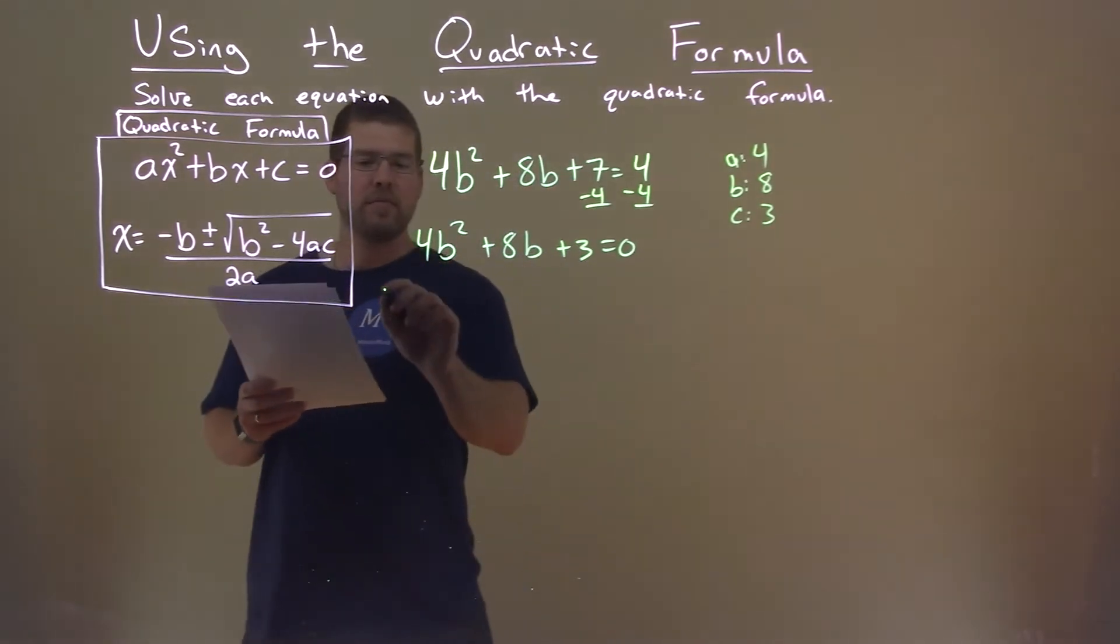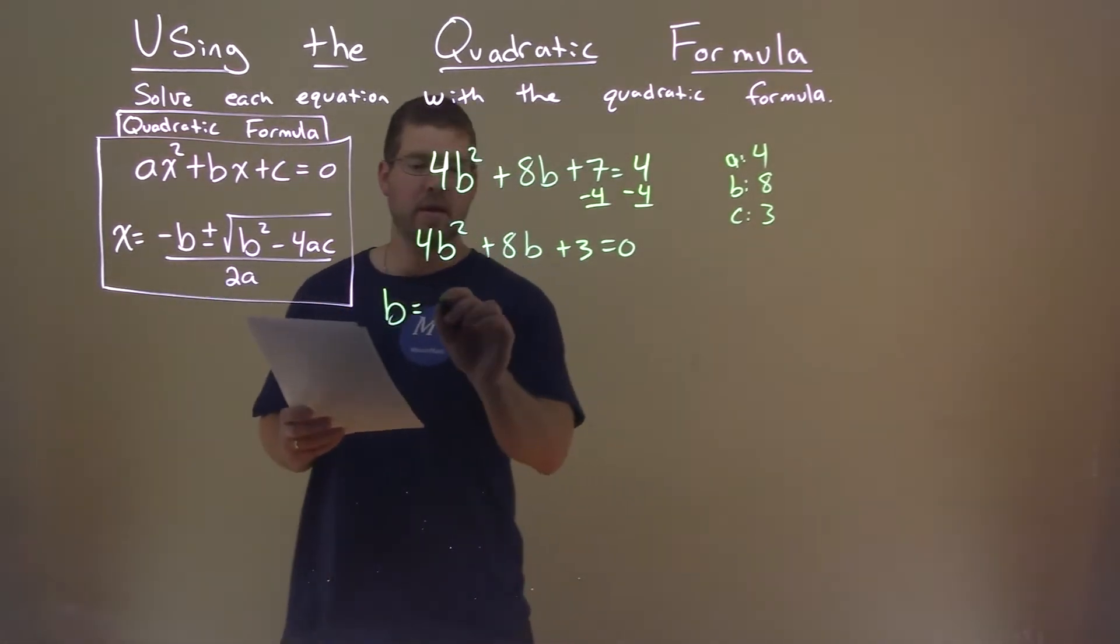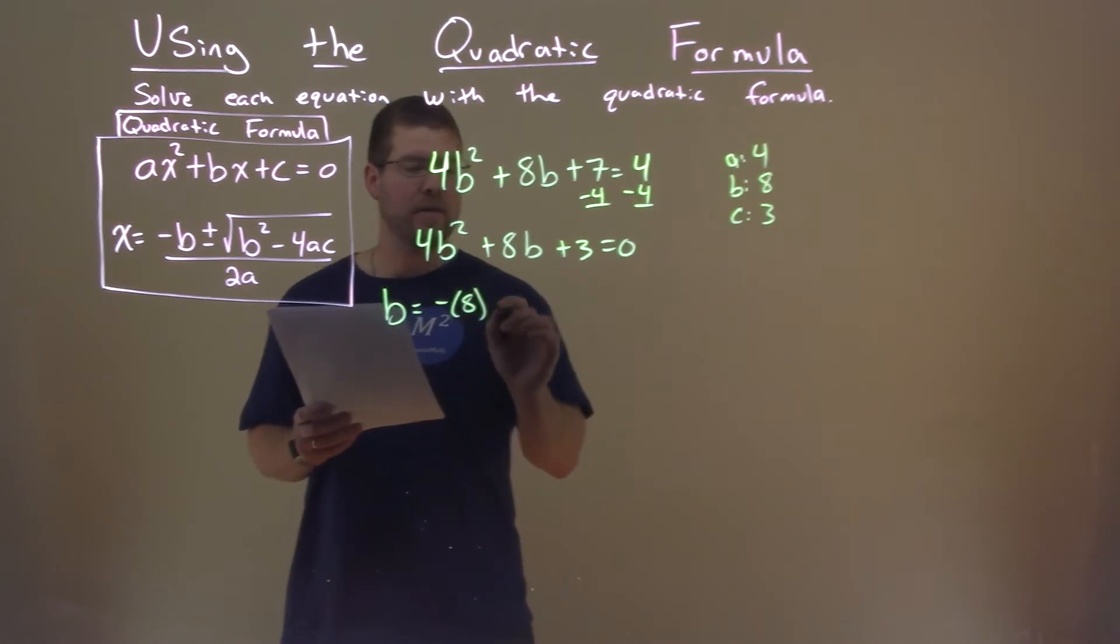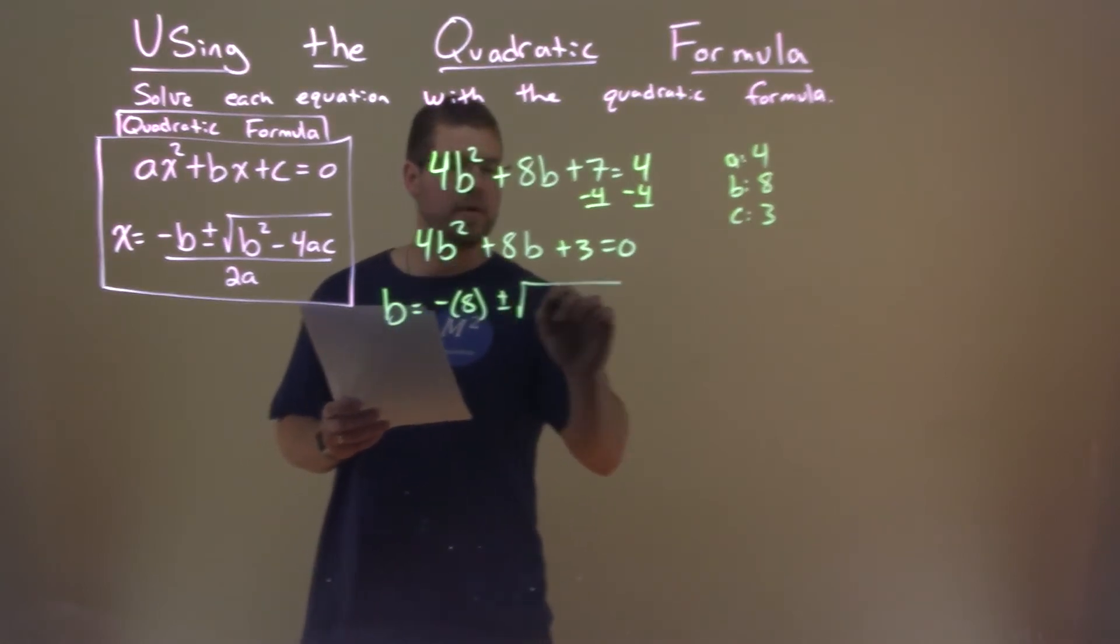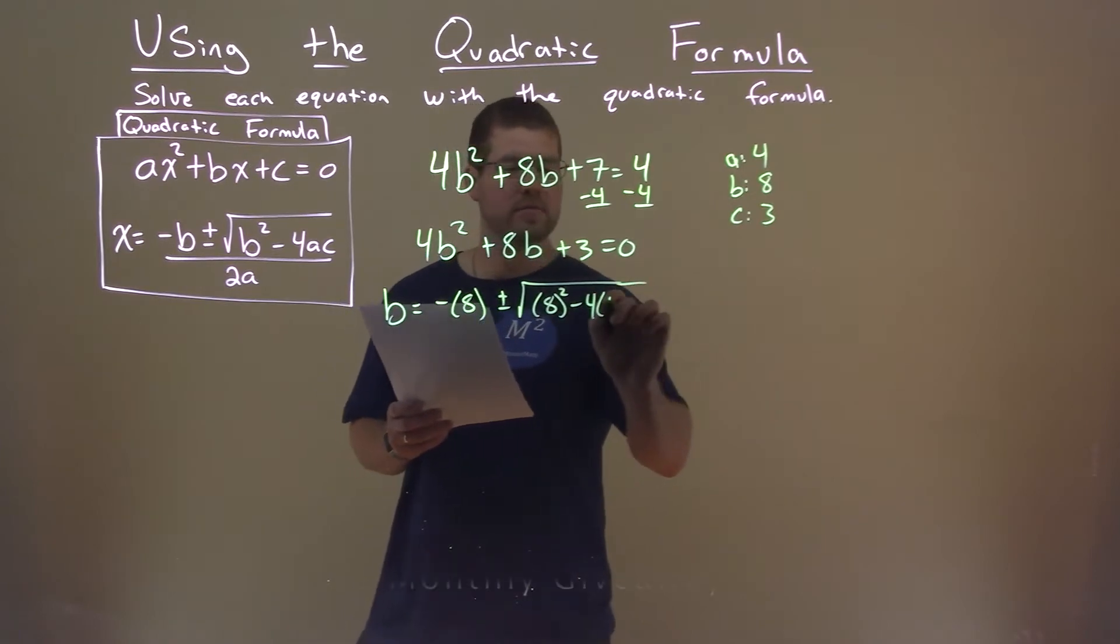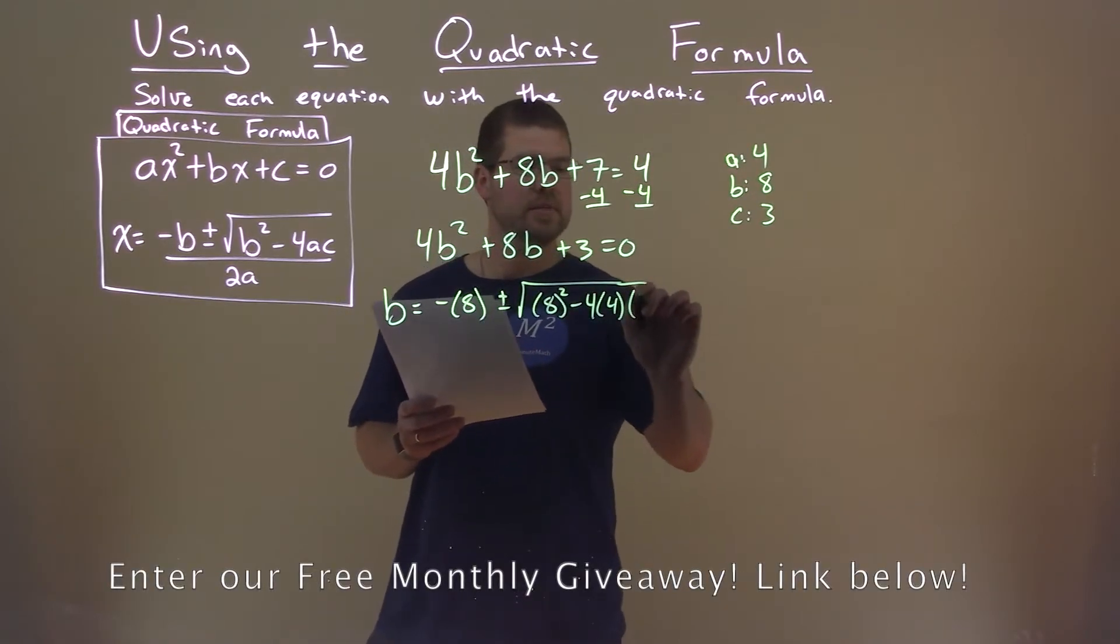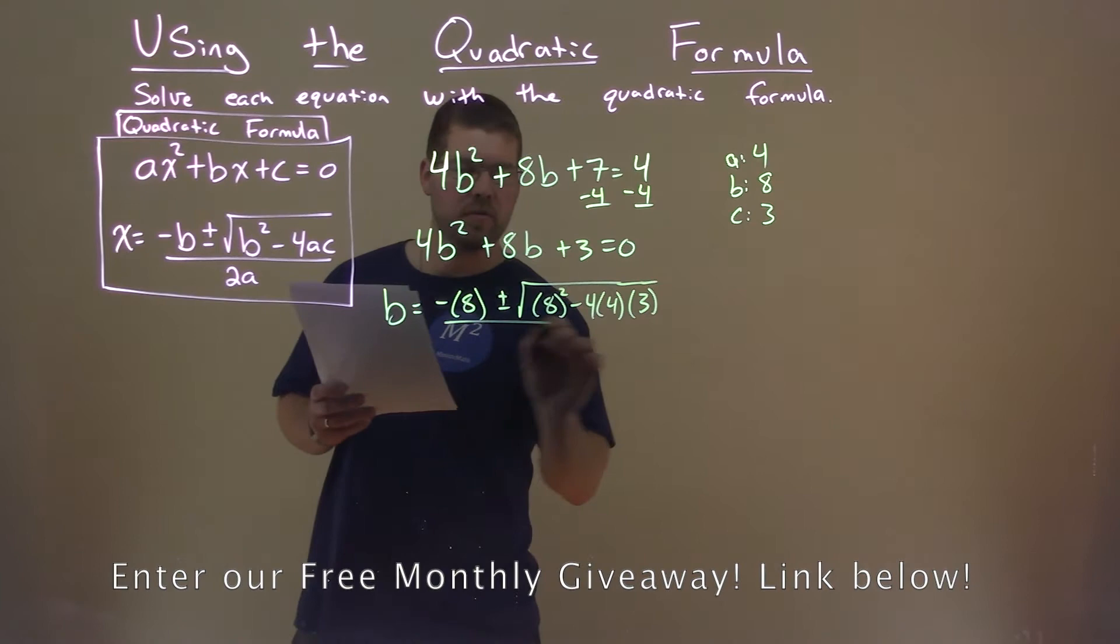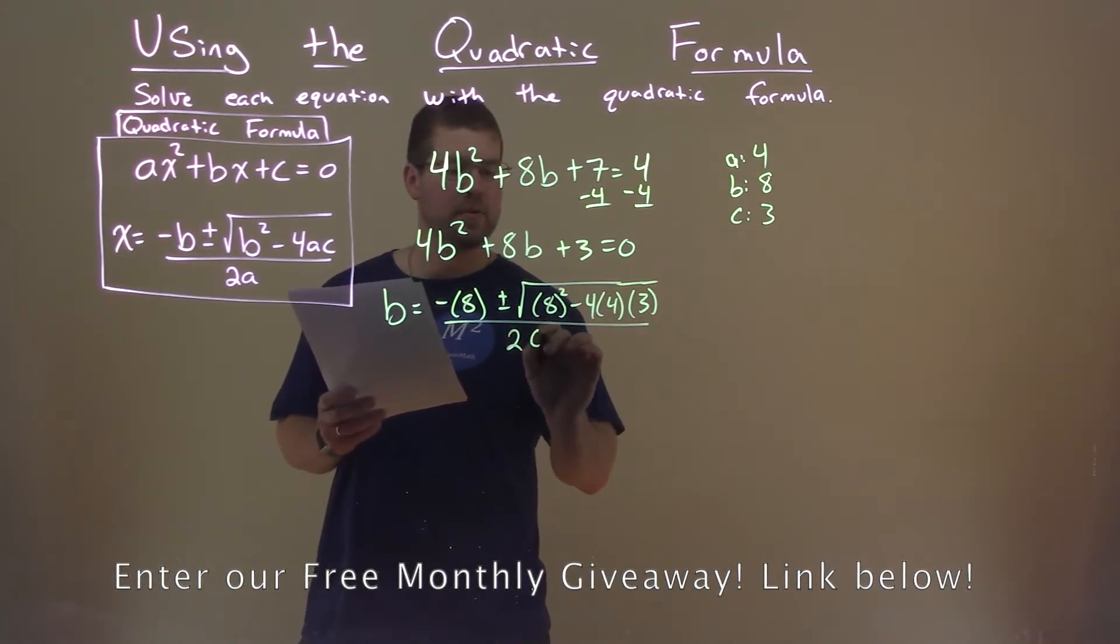Now with that information, we can use the quadratic formula. Negative b, so minus 8, plus or minus the square root of b squared minus 4ac: 8 squared minus 4 times 4 times 3, all over 2 times a, which is 4.